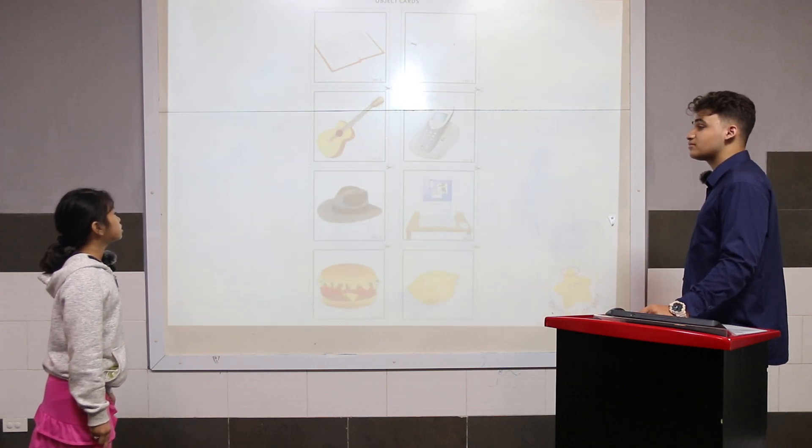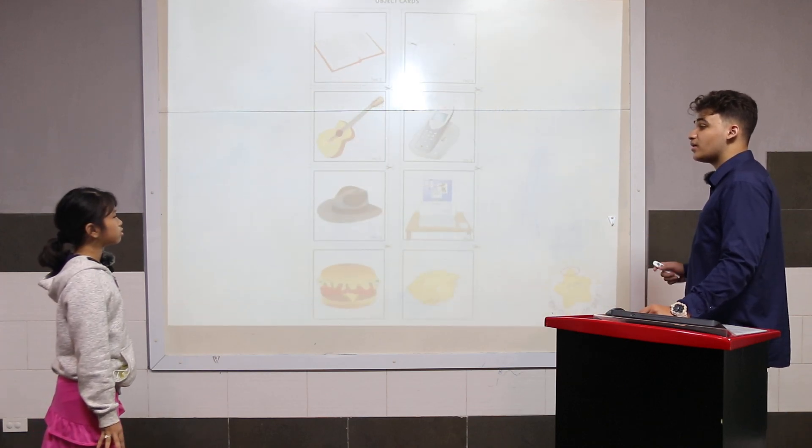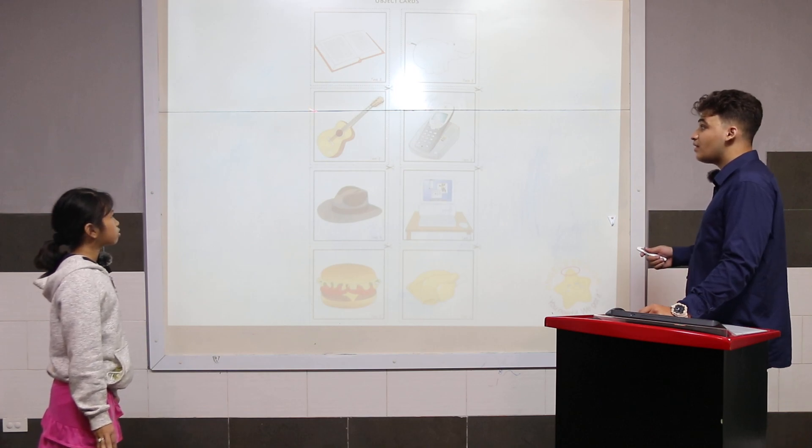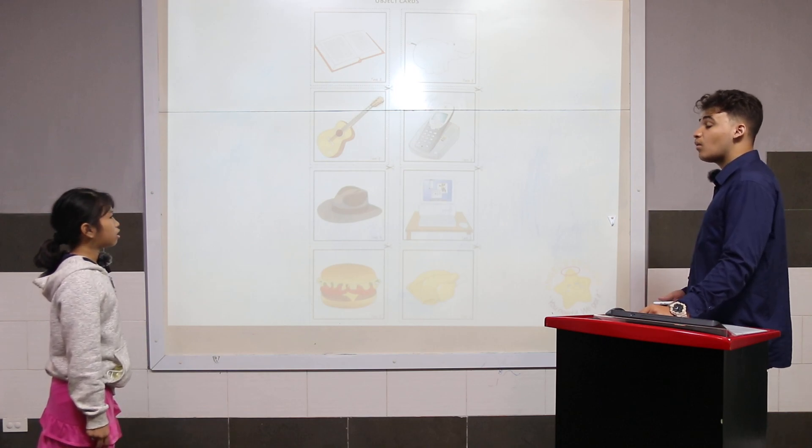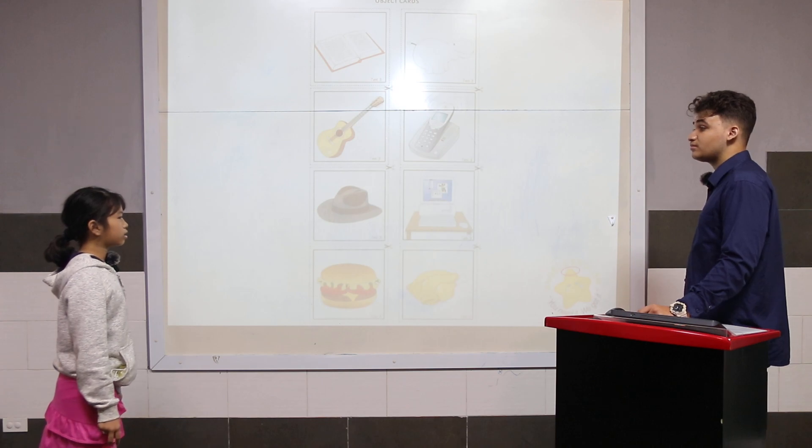What is it? It's a book. Good, what can you do with a book? I can read a book. What is it? It's a guitar. What can you do with a guitar? I can play music.